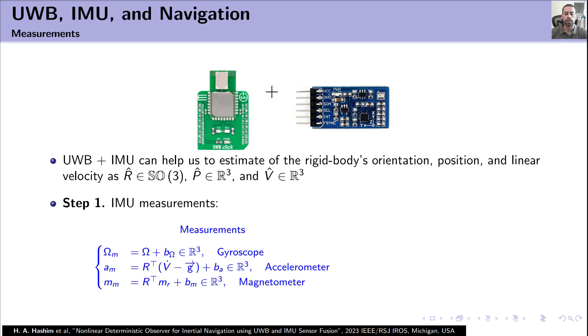So now let's start with step one. With step one, we'll start with IMU measurements: gyroscope, accelerometer, and magnetometer. Next, we go to the normalization equation, similar to this equation.